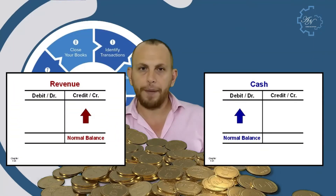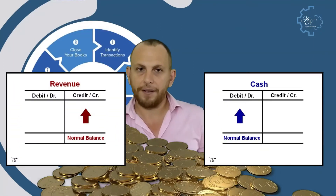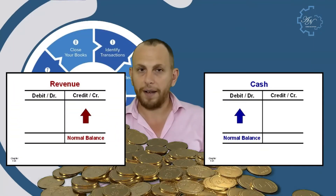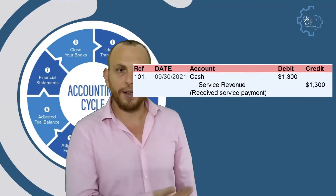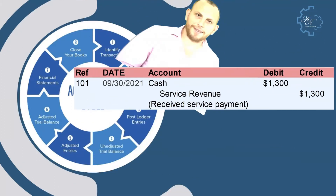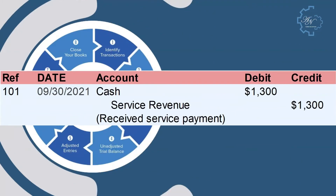For example, if a business receives $1,300 from a customer for services rendered, both the cash and revenue accounts increase — cash will be debited and revenue will be credited for $1,300. The journal entry looks like this, and the explanation is 'receive service payment.'